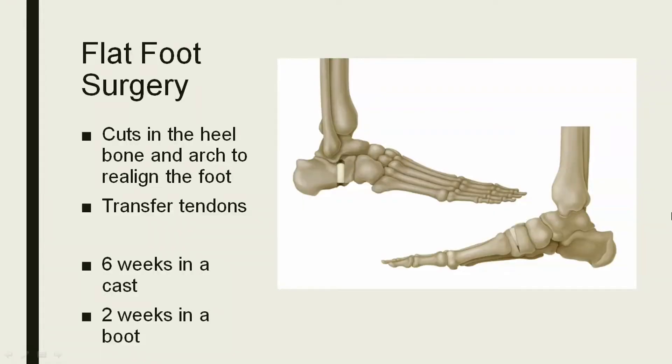If none of that works, there's a surgery to treat flat foot as well. Similar to a bunion, there are a lot of different ways to do it. You make multiple cuts in two or three of the bones and realign them — realign the arch, realign the heel — to try to recreate your arch. You also have to get rid of the inflamed tendon and use another tendon in its place, called a tendon transfer. With a typical surgery for this, I'll keep you in a cast for about six weeks with no weight bearing, then move to a boot to transition back to weight bearing.